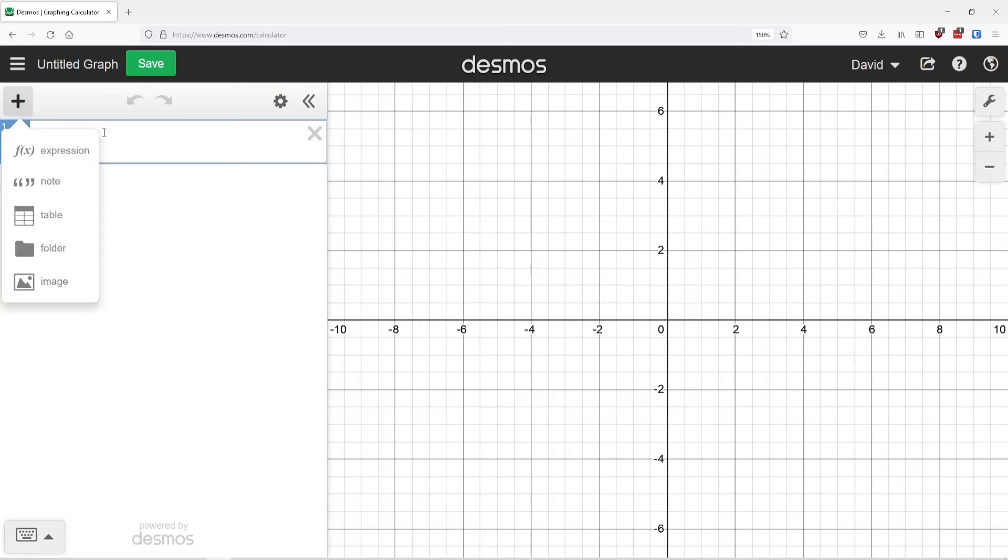If I click on this, I can add an expression, which is what we've been doing. And I can also add a bunch of other things like notes, tables, folders, and images. We're going to choose table. You can see that when I do that, instead of having a box that I can type an equation into, I now have something that I can type in something a little bit more specific table-wise.